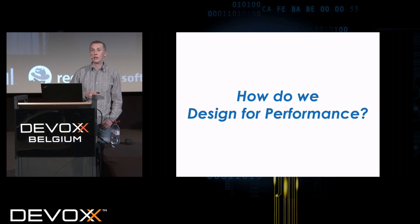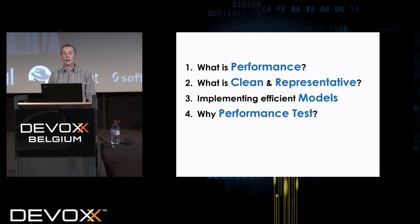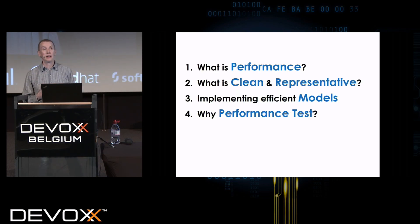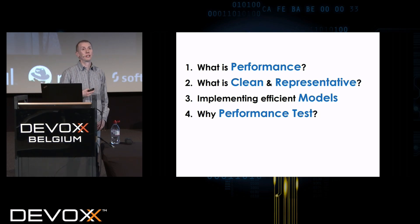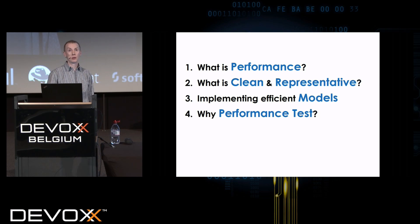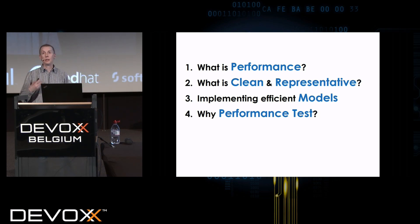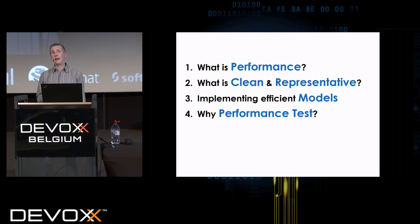I want to go back to the start and look at what it means to design for performance at a fundamental level and what we can do. The structure of this talk: we'll spend a little bit of time talking about what performance is itself, then how we make clean and representative models, then how we implement those models, and finally how we test this to prove that it actually works.